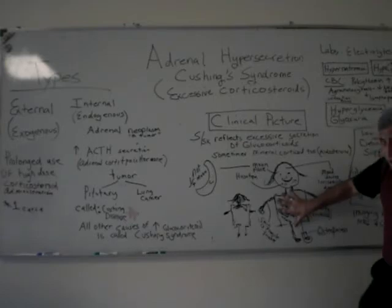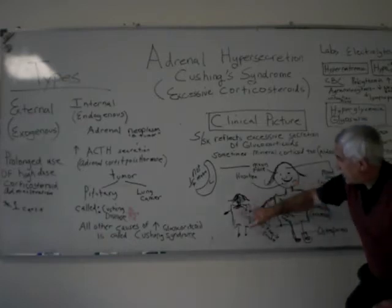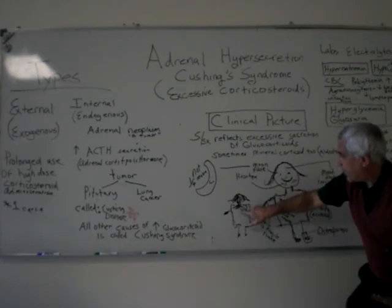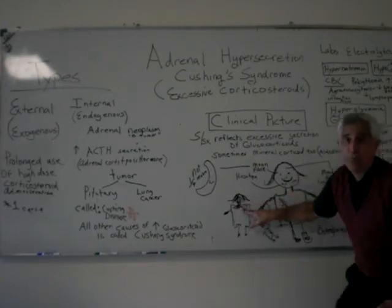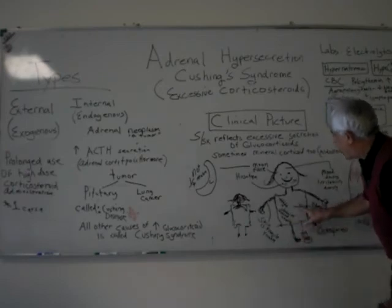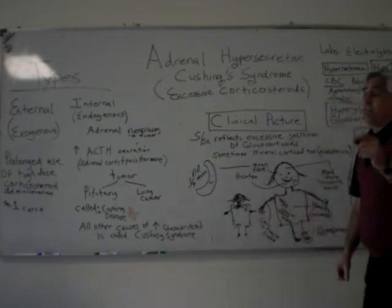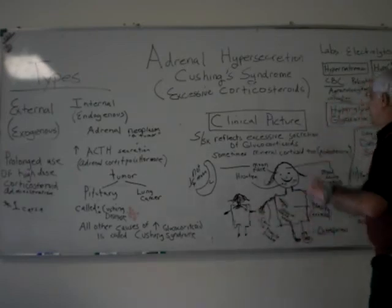The patient has a large trunk out of proportion to the extremities — that's called truncal obesity. And if you turn them around, they have a fat pad on the upper part of the back, below the neck — that's called a buffalo hump. Truncal obesity and the buffalo hump are characteristic of Cushing's Syndrome.